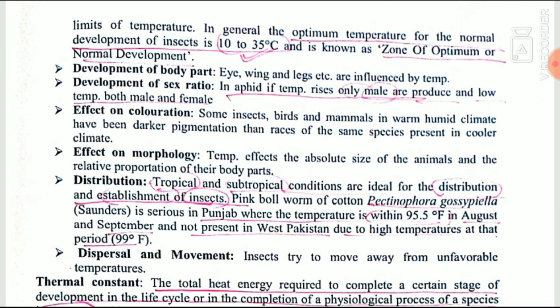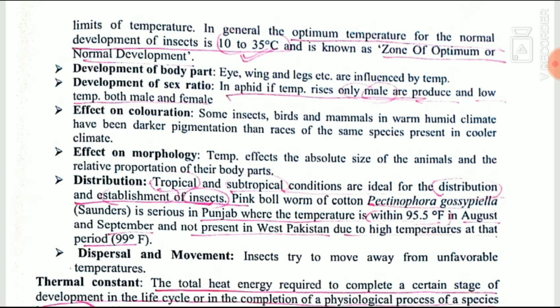Regarding distribution, tropical and subtropical conditions are ideal for insect distribution. For example, the pink bollworm assumes a serious condition in Punjab due to high temperatures around 35.5°F in August and September, and is not present in West Pakistan due to high temperature. A temperature of approximately 95.5°F is suitable for the growth and development of pink bollworm. Insects also try to move away from unfavorable temperatures — this is called dispersion and movement.